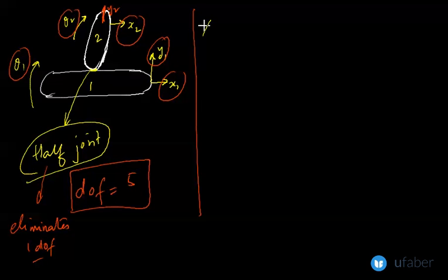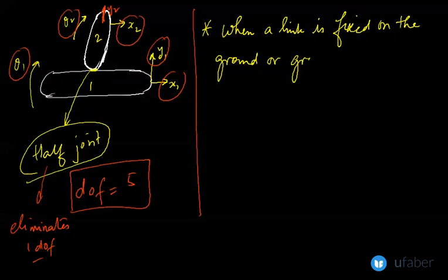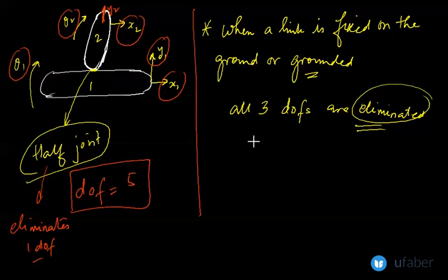Now a very important concept that comes into play is that when you have a link, and that link is fixed onto the ground, or you can say when the link is grounded. See when the link is grounded, all three DOFs are eliminated because a grounded link cannot move anywhere. So it will not have any degree of freedom whatsoever.